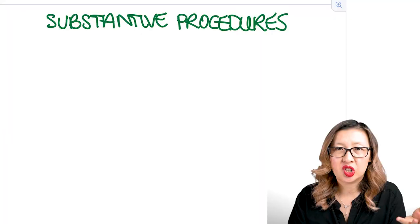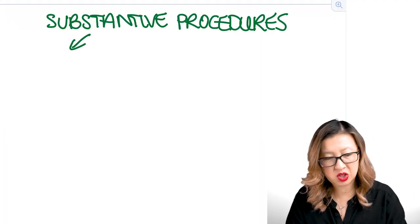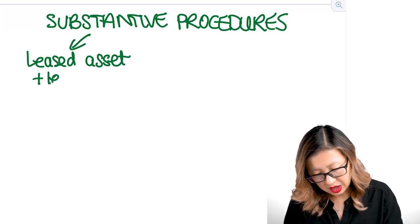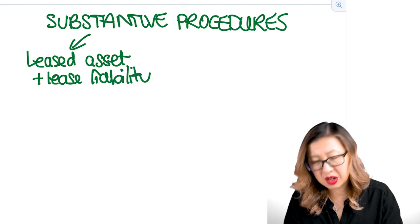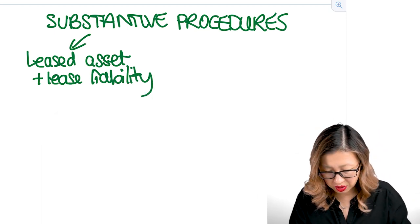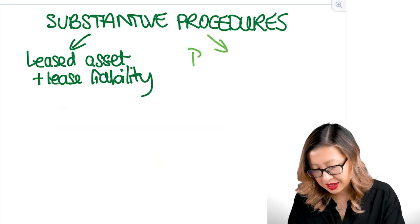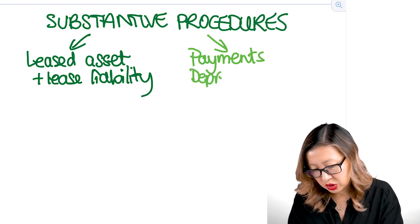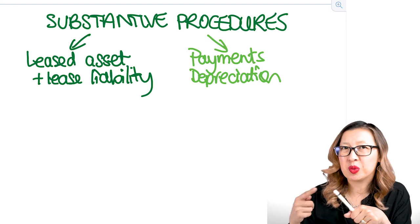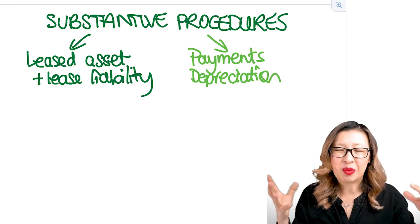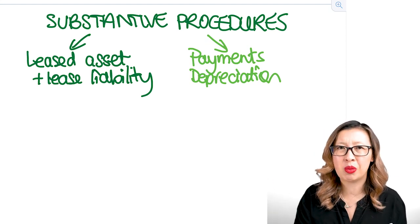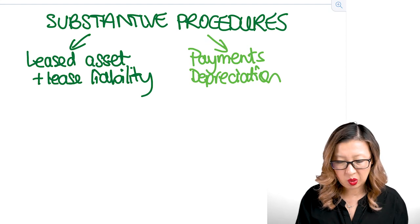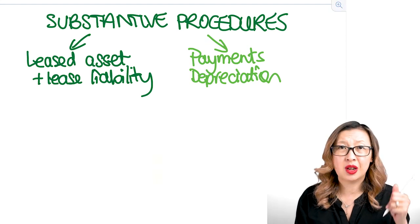When it comes to substantive procedures, it gets a little more complicated because we have two components: the leased asset and the lease liability, which are balance sheet items with balance assertions to worry about. The other thing to consider is that our payments to the lessor and the recording of depreciation involve transaction assertions. I'm going to split these up and do them separately. Depreciation I won't cover in depth — you can look at my property, plant and equipment video for that — so let's start with the leased assets and lease liabilities.